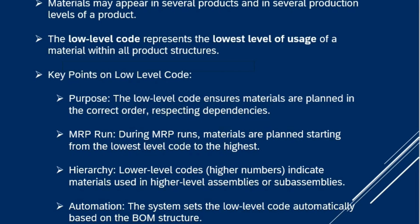The low level code can be seen in the material master. Its key purpose is to ensure materials are planned in the correct order during MRP Live or classic MRP. Planning is sorted starting from the lowest level — it's a three-digit number. The system starts with triple zero (000), then moves to 001, then 002. All materials at triple zero are picked up from the planning file entry first.